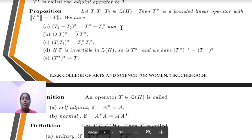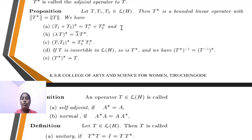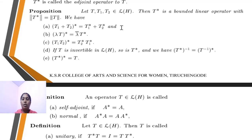First: (T₁ + T₂)* = T₁* + T₂*. Next: (λT)* = λ̄T*. Then (T₁T₂)* = T₂*T₁*, that is conjugate. If T is invertible in L(H), then (T*)⁻¹ = (T⁻¹)*.